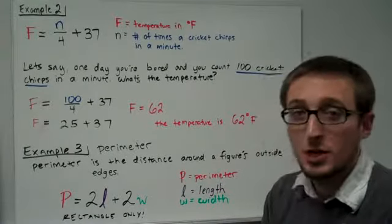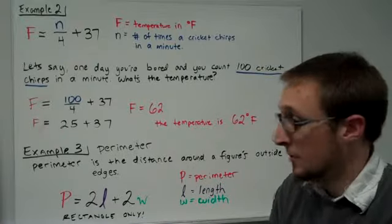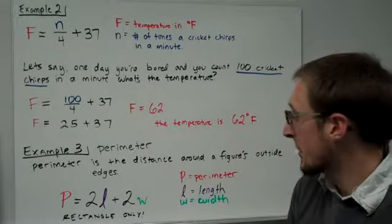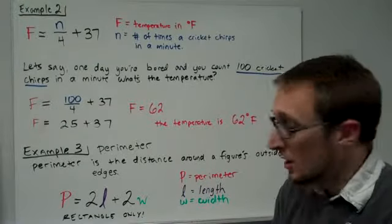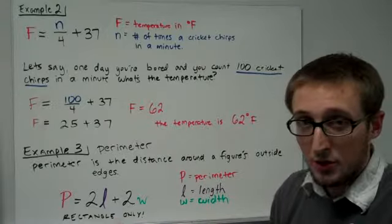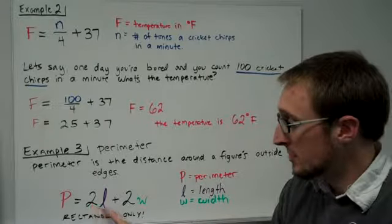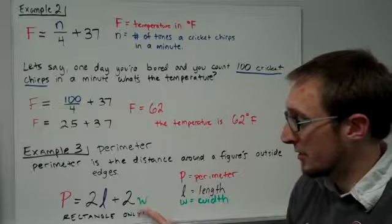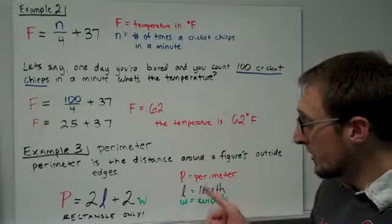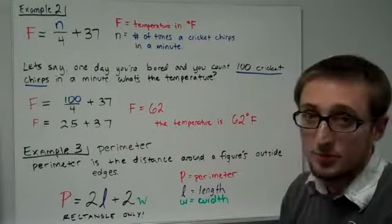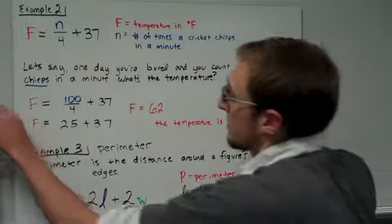Finally, for our third example, we're going to talk about perimeter, a very important formula. Perimeter is basically the distance around a figure's outside edges. For a rectangle, we're going to be focusing on that formula. It's two times the length plus two times the width. That's the perimeter. P is the perimeter, L is the length, and W is the width. So let's look at an example.